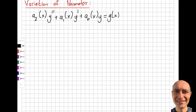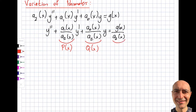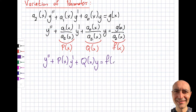We divide both sides by a_2(x), giving us y'' + (a_1(x)/a_2(x))y' + (a_0(x)/a_2(x))y = G(x)/a_2(x). I call a_1/a_2 = P(x), a_0/a_2 = Q(x), and G/a_2 = F(x). Rewriting, we get y'' + P(x)y' + Q(x)y = F(x). This is our standard second order linear differential equation.